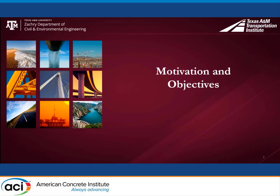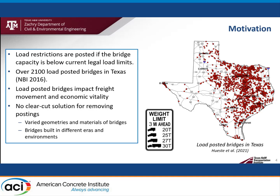Let's begin with the motivation and objectives for this research. Bridges with capacities below current legal load limits are load posted. The map on the right shows the distribution of over 2,100 load posted bridges in Texas. Load posted bridges matter because they have significant impact on freight movement and economic vitality. However, there is no clear-cut solution for removing load postings due to different bridge geometries, materials, and the different areas and environments in which the bridges were built.